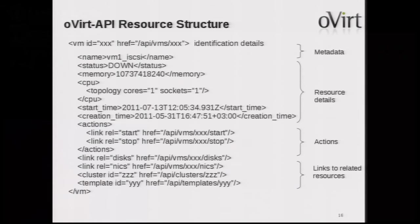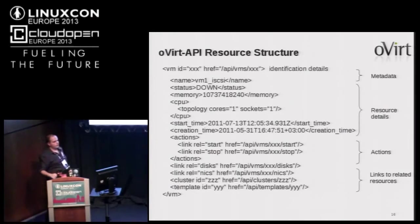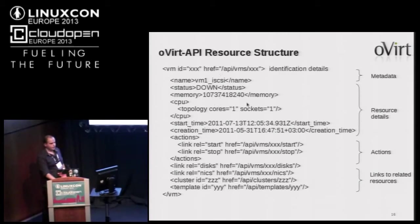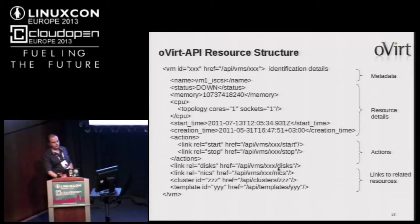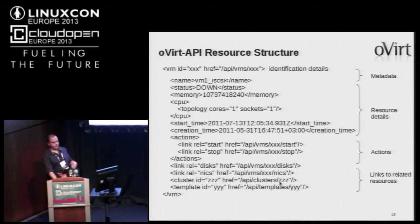As a result you get the resource in XML format — the metadata and details of the resource. For a VM, that includes the name, status, memory, CPUs, when it was started, and so on. You also get the actions available on this resource and links to other resources, such as the specific disks, NICs of the VM, and the cluster that the VM is part of.